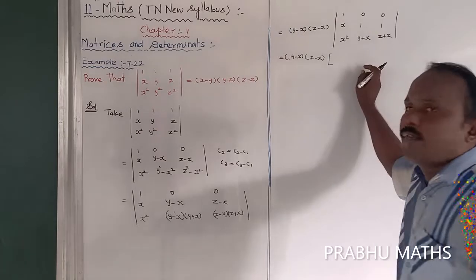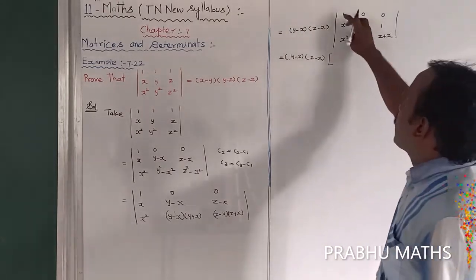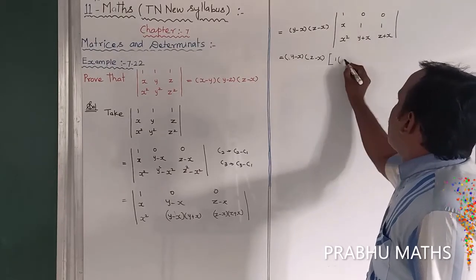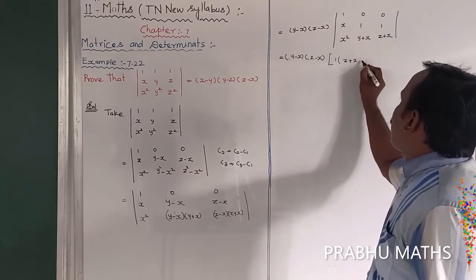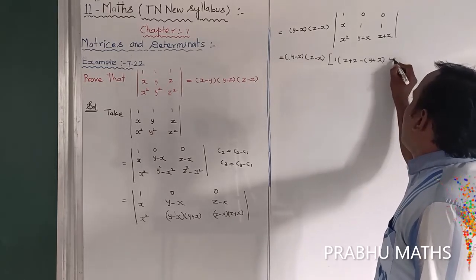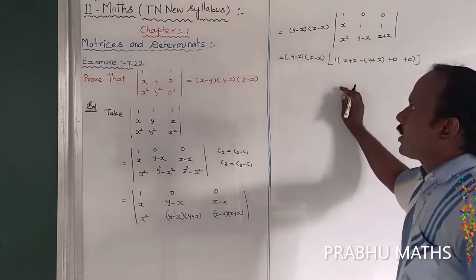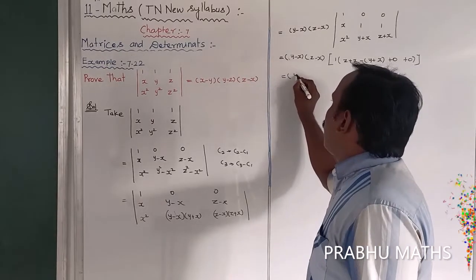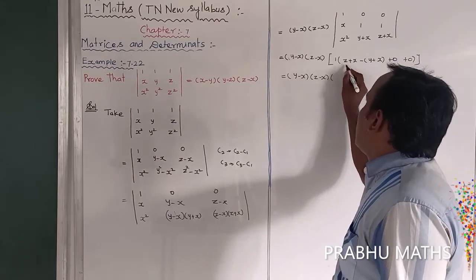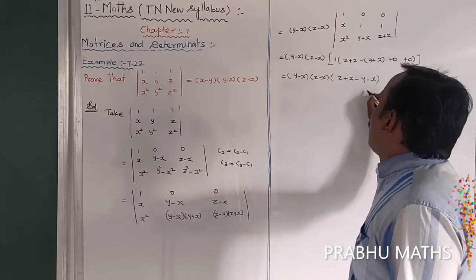Now expand along the first row R1. The expansion gives 1 times the 2×2 minor. The first multiplication gives (z + x) and the second gives (y + x); the other terms are 0. So we get (y − x)(z − x) into [(z + x) − (y + x)].